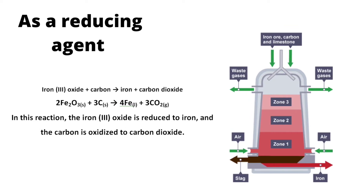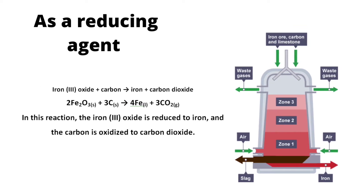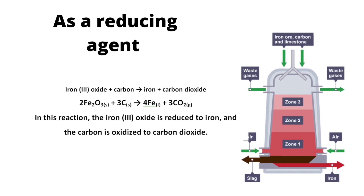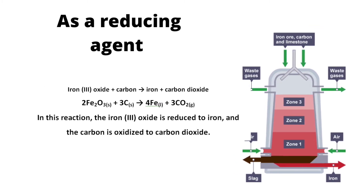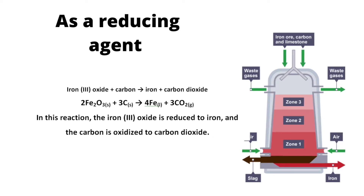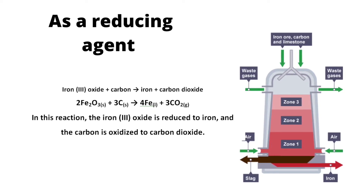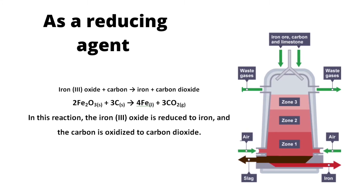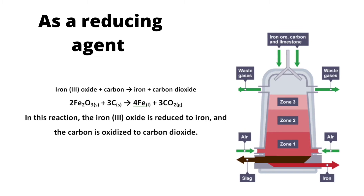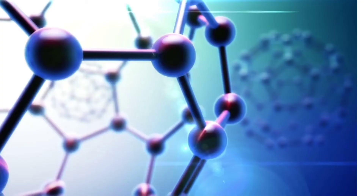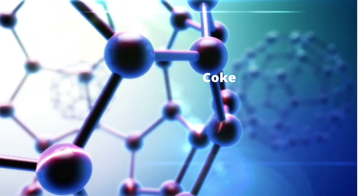A reducing agent will donate electrons and become oxidized in the process. Coke is used in the extraction of iron, and in this process it acts as a reducing agent, as you can see in the equation. This process gives you the free metal called iron.